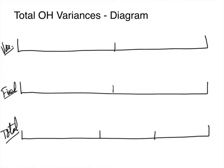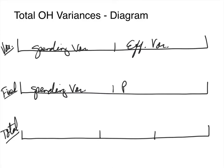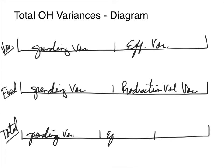Now we can label our variances. The variable variances are a spending variance and an efficiency variance. Fixed overhead variances have a spending variance as well. We do not have an efficiency variance for fixed, but we do have a production volume variance. So for our total overhead variances we will have a total spending variance, a total efficiency variance, and a total production volume variance.